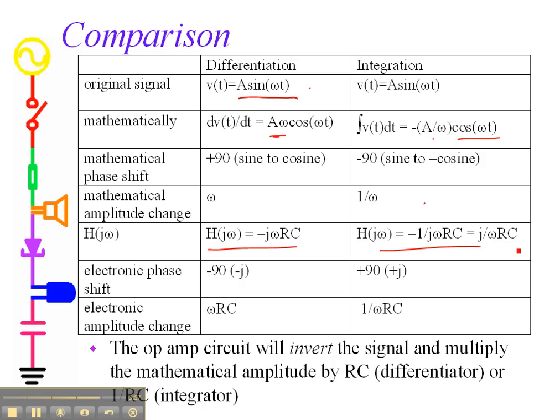And we represent these in these two ways here: that something that goes as j omega times something represents differentiation, and something that goes as 1 over omega represents integration. The amplitude change I've mentioned before is that we multiply by RC in one case and divide by RC in the other case. So the op amp circuit will invert the signal and multiply the mathematical amplitude by RC if it's a differentiator, 1 over RC if it's an integrator.